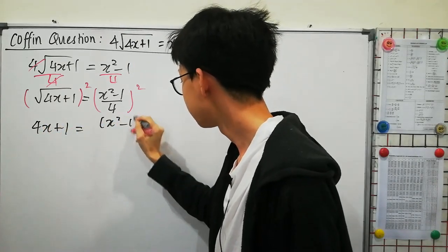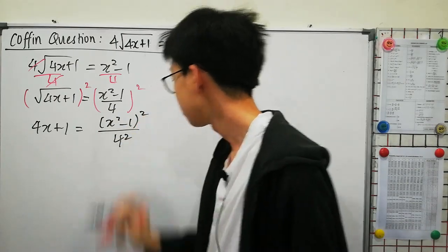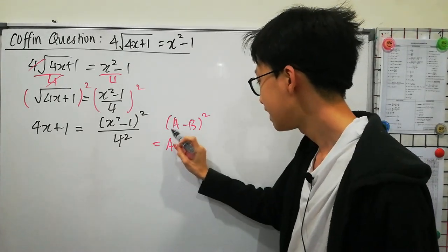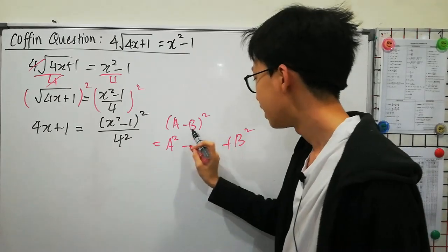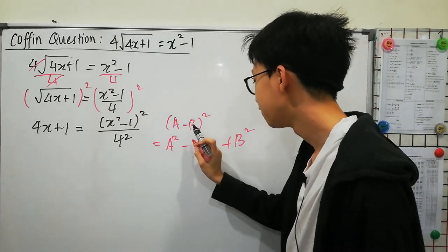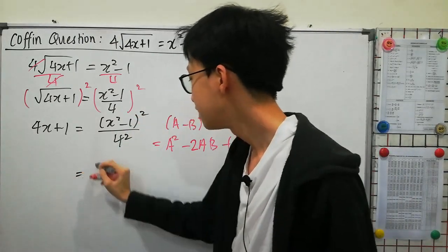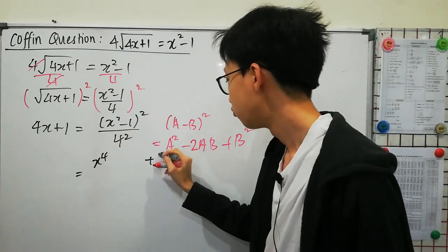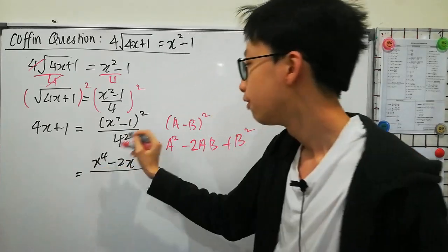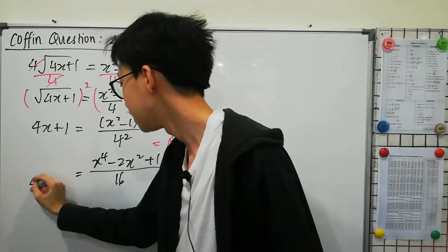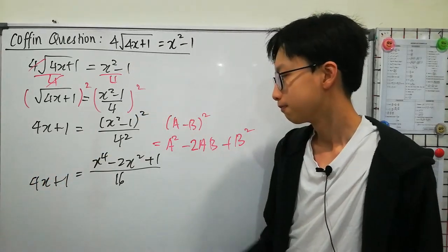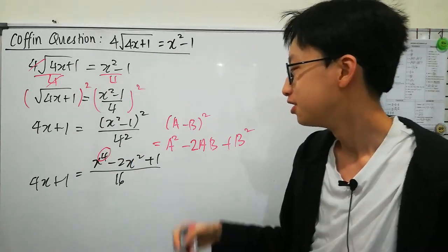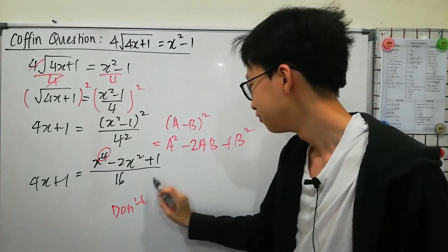On the right-hand side, we have x squared minus 1, all squared, over 4 squared. We know that (a minus b) squared equals a squared plus b squared minus 2ab. In this case, when we square x squared we get x to the 4th, plus 1 at the back, minus 2x squared in the middle, all over 16. We end up with 4x plus 1 on the left. We have a 4th degree here, which is no good, because we don't know how to solve a quartic equation. So don't do this.